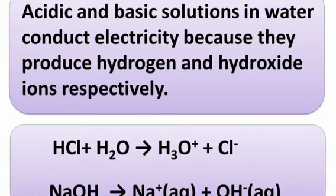Acidic and basic solutions in water conduct electricity because they produce hydrogen and hydroxide ions respectively. For example, HCl plus H2O will give you H3O+ plus Cl-, that is hydronium ion and chloride ion. Then NaOH gives Na+ plus OH-, that is sodium ion and hydroxide ion.